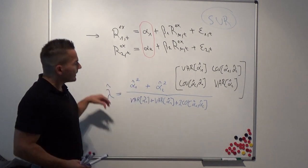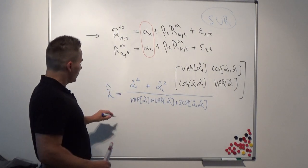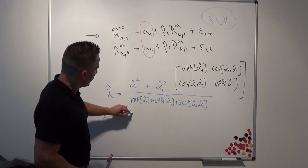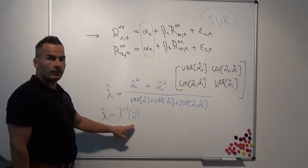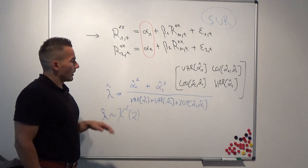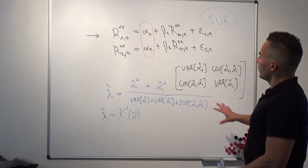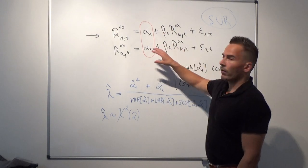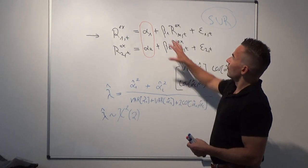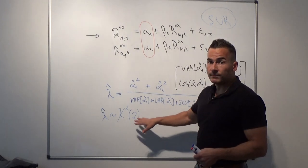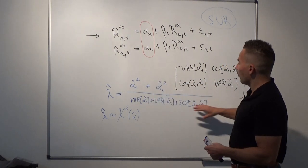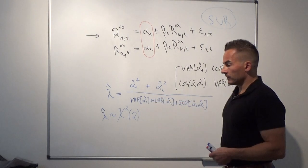That's the basic idea of the test statistic. λ̂ is distributed as a Chi-square distribution with two degrees of freedom — two degrees of freedom because we have two parameters we are interested in. If we have 25 test assets, as is usual in Fama-French papers, the test statistic would be distributed as Chi-square with 25 degrees of freedom, and we would have 25 intercept terms entering the numerator and a large number of covariance terms in the denominator.